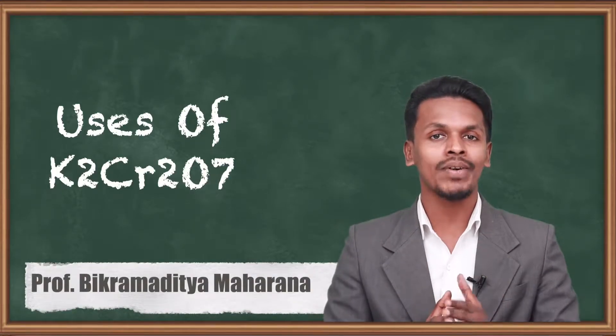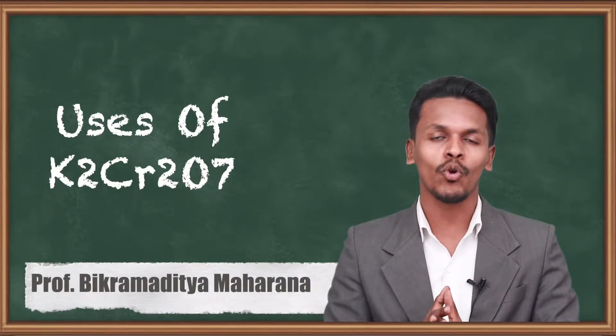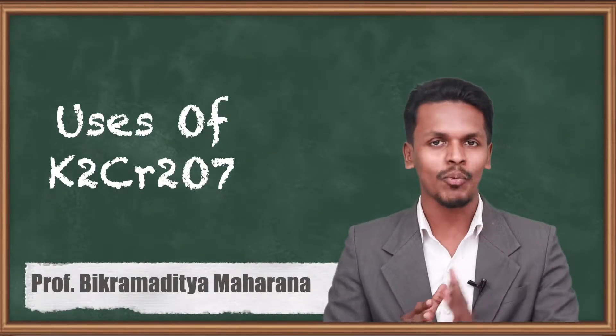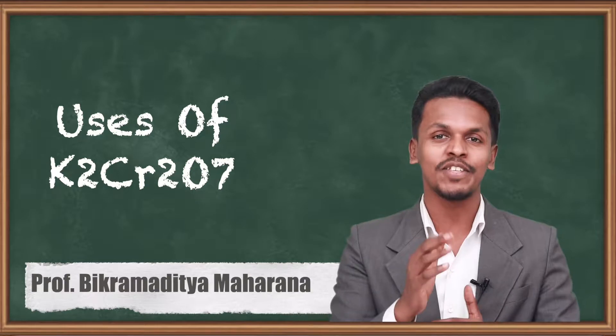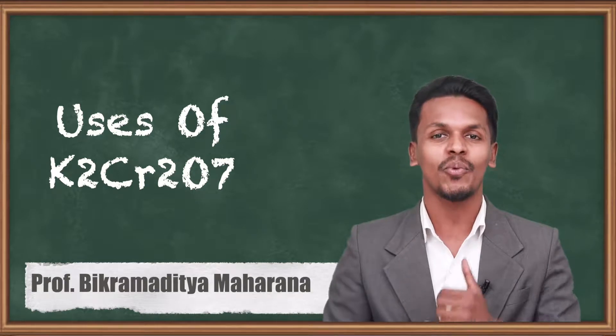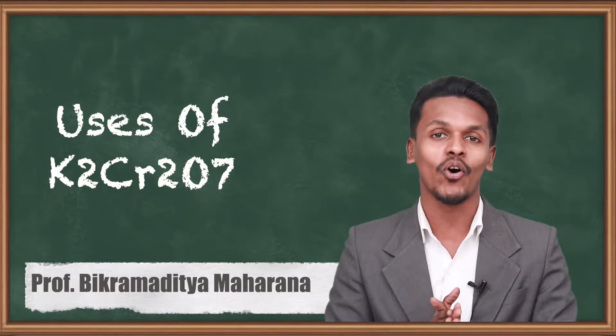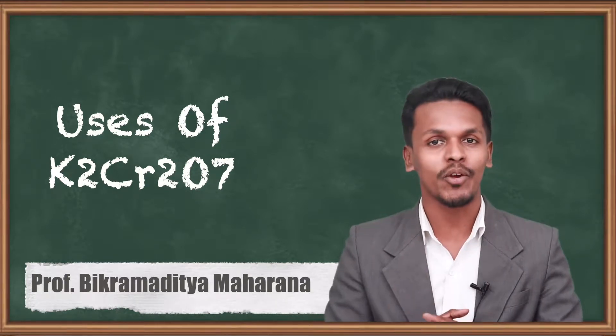In the previous topic we discussed the structure of chromate as well as dichromate ion. Now in this topic we are going to talk about the uses of potassium dichromate, K₂Cr₂O₇.